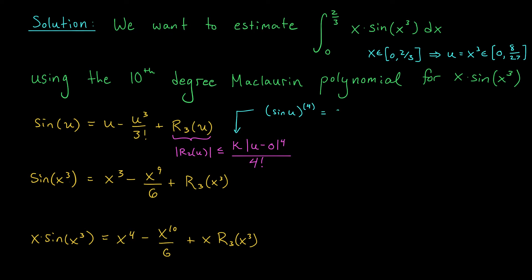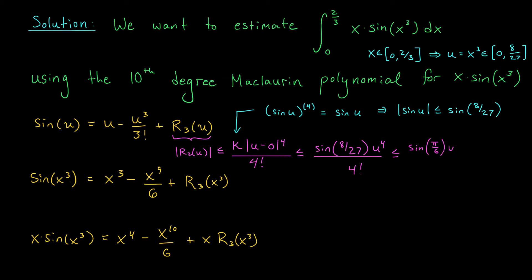So k is an upper bound for the fourth derivative of sine u over the interval [0, 8/27]. The fourth derivative of sine u is again sine u, which is positive and increasing over this interval. So |sin(u)| is bounded above by sin(8/27). This gives an upper bound on the error of sin(8/27)·u⁴/4!. Since 8/27 < 1/2 < π/6, this whole term is less than sin(π/6)·u⁴/4! = (1/2)·u⁴/24 = u⁴/48.